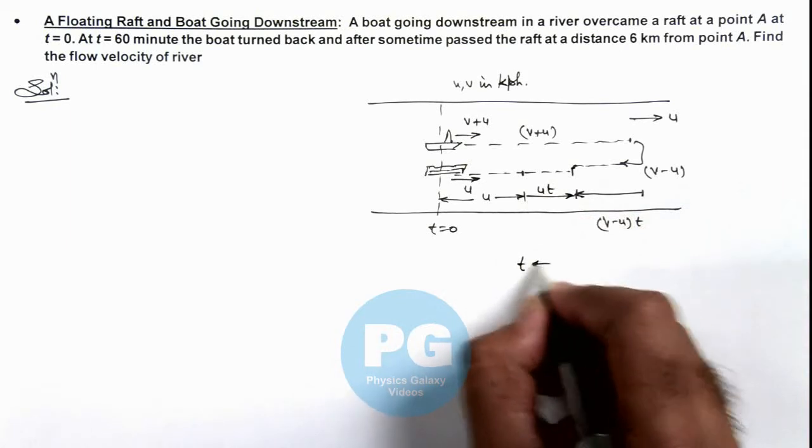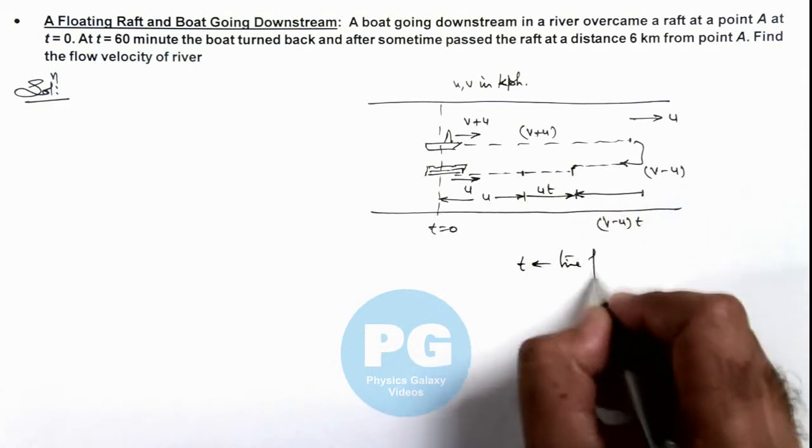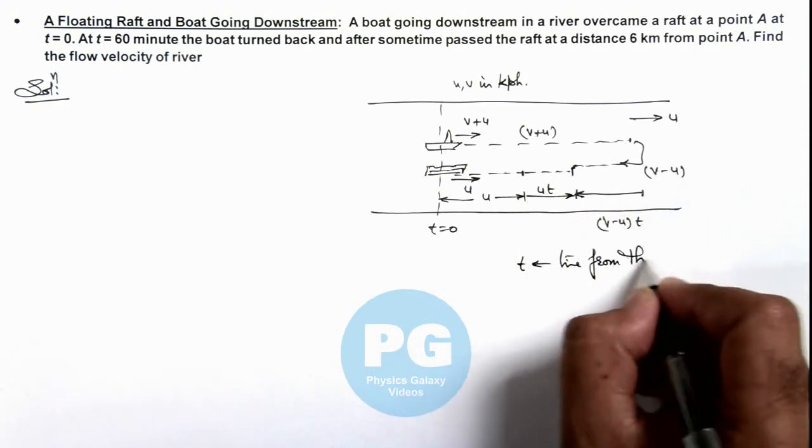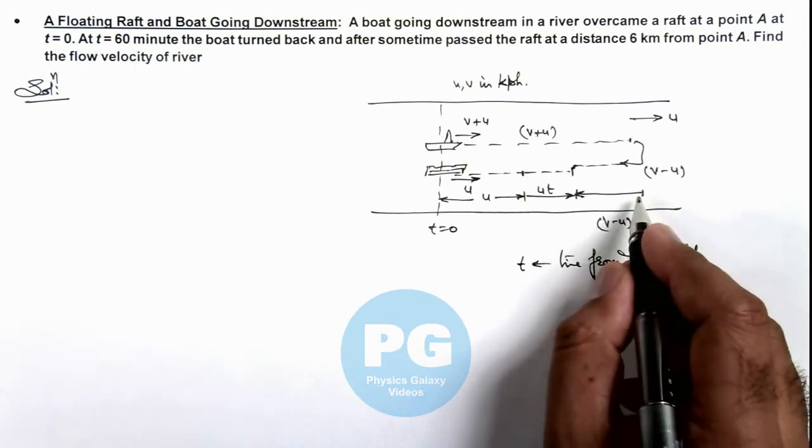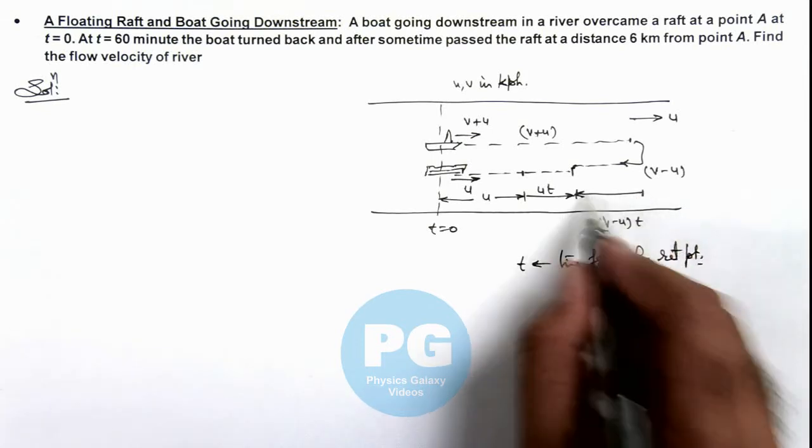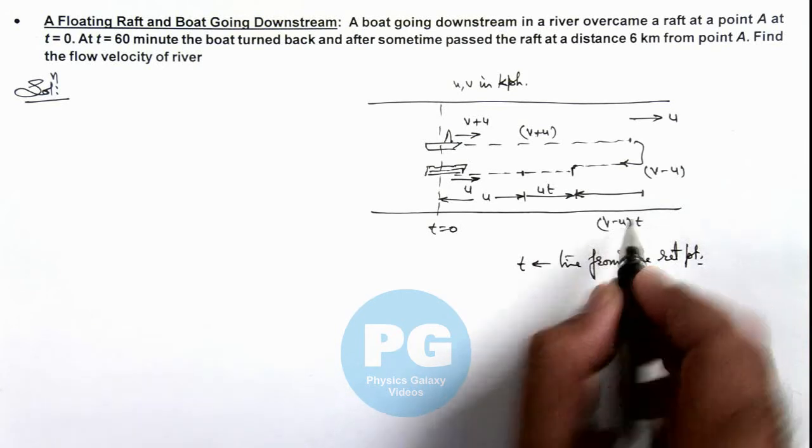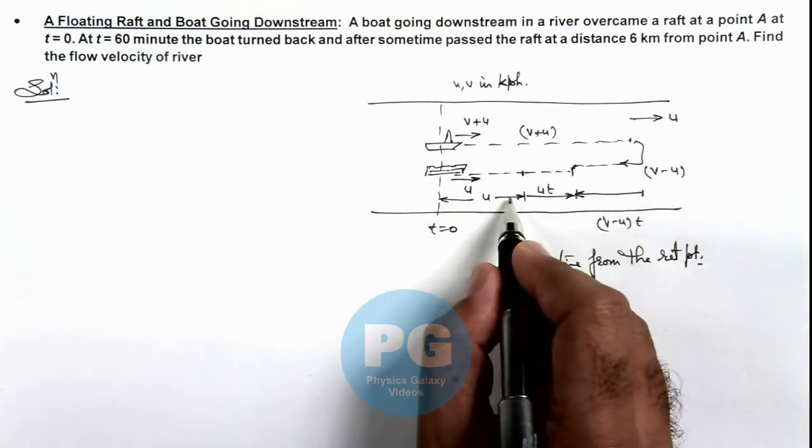Here I am taking t as the time from the returning point. In this situation, this distance is v minus u times t, this distance is ut, and this distance is u.